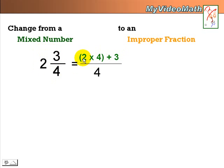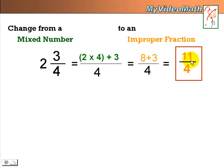So it is 2 times 4 plus 3 over the denominator. And then we need to evaluate the upper portion. So the new numerator becomes 8 plus 3. That equals 11 over 4. And this is a converted improper fraction.